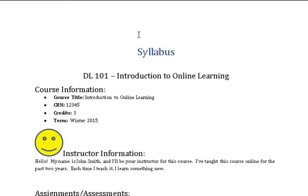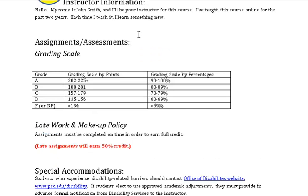Shape field. Heading level three — graphic: smiley face, 0.74 inches wide by 0.73 inches high. This picture is of a smiling face. Heading level three: Instructor Information. My name is John Smith and I'll be your instructor for this course. I've taught this course online for the past two years; each time I teach it I learn something new.